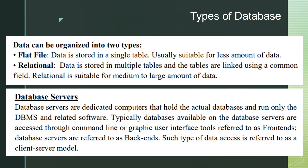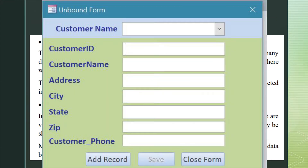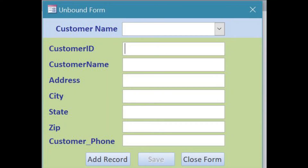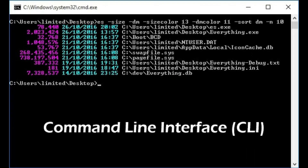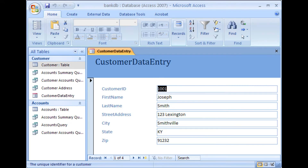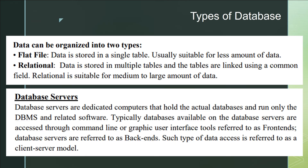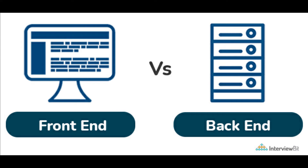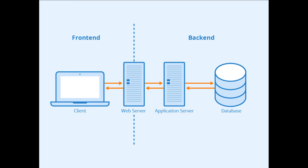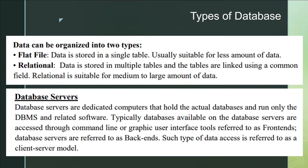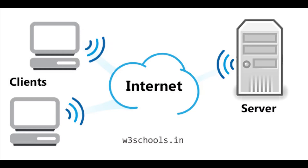When we access data on these servers, we access it through a front-end interface, while the actual data is saved in the database — that is called the back-end. So the front-end and back-end together are used to access the data. This type of data access is referred to as a client-server model, where the server stores the data and the client accesses it.